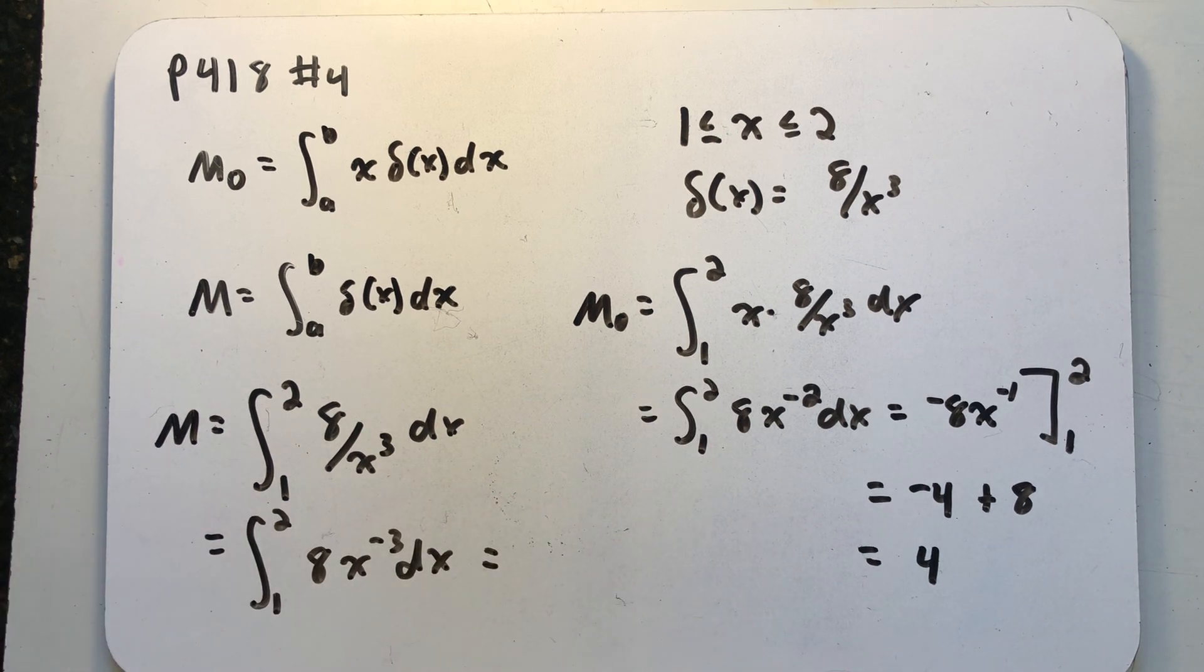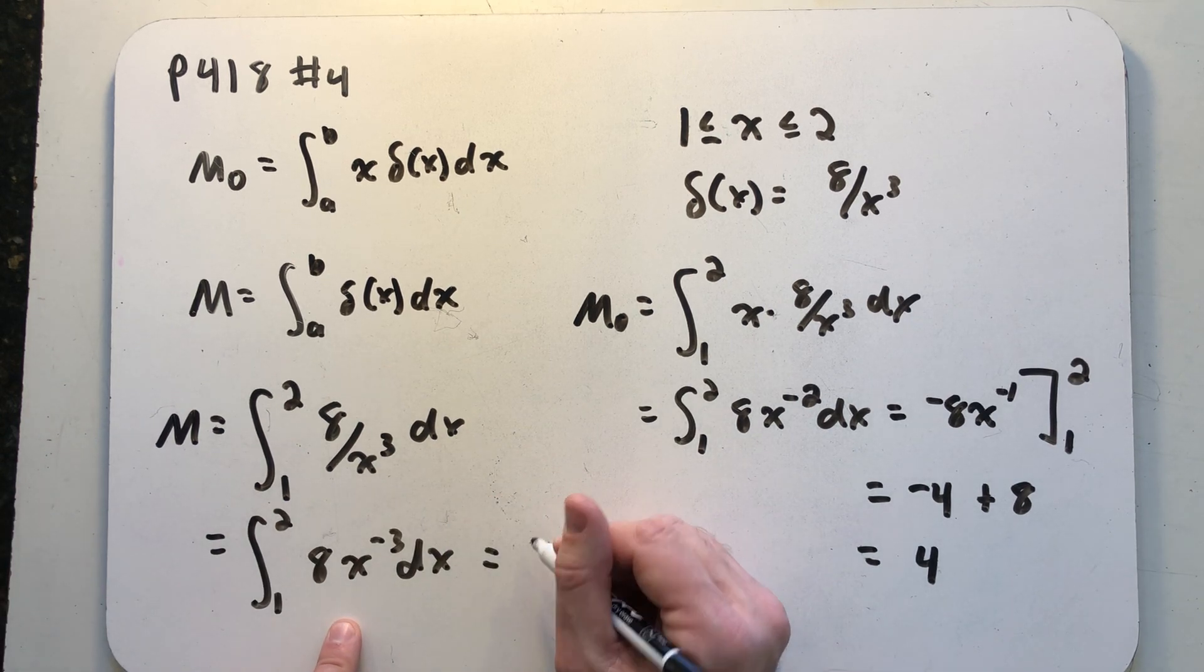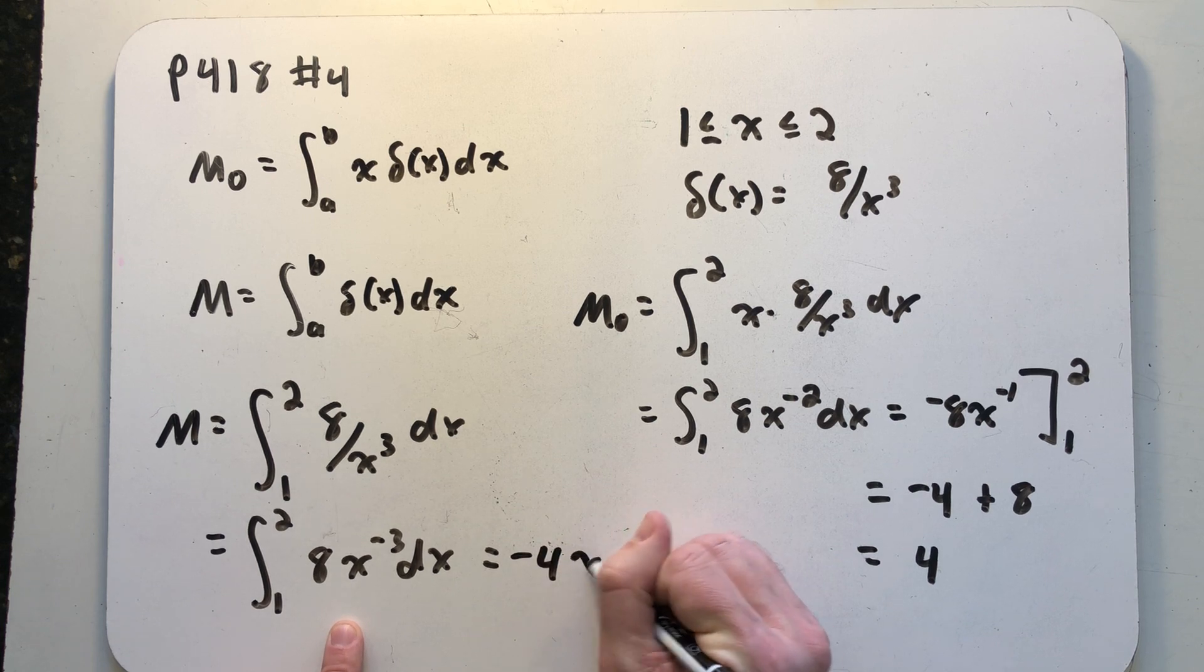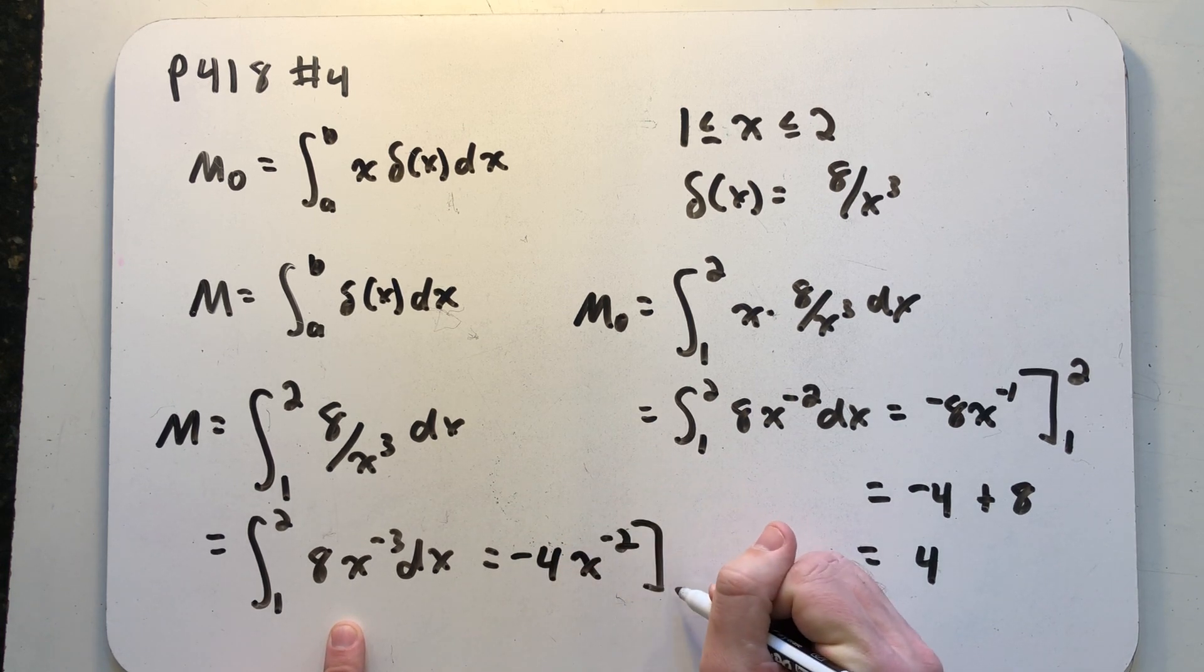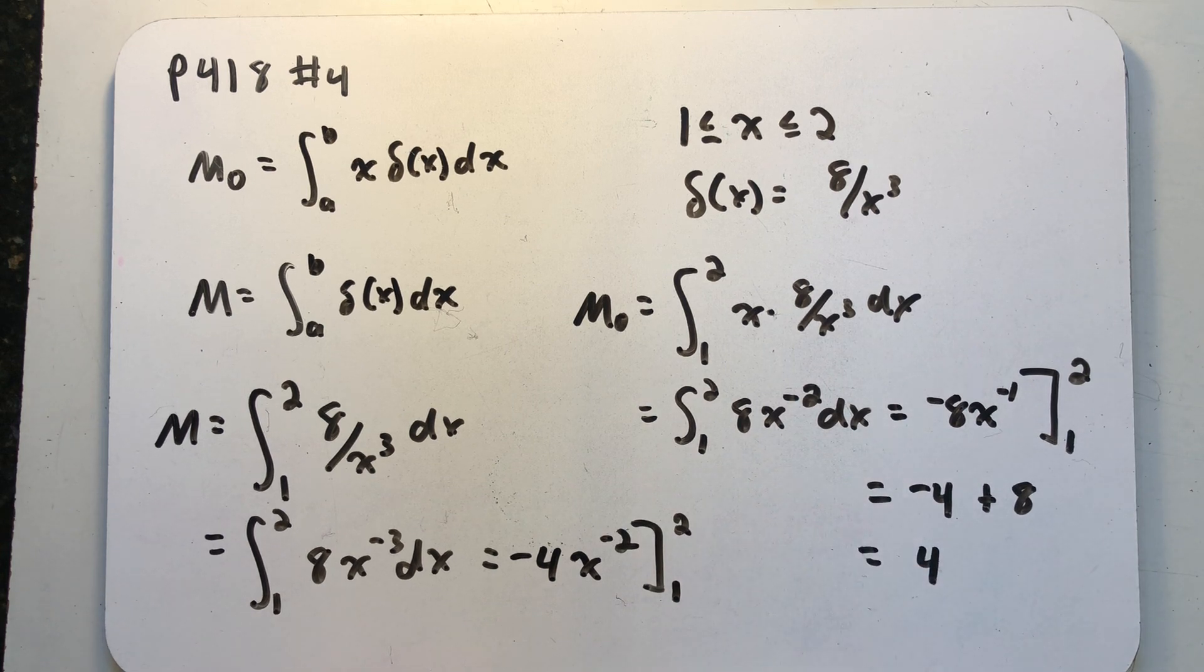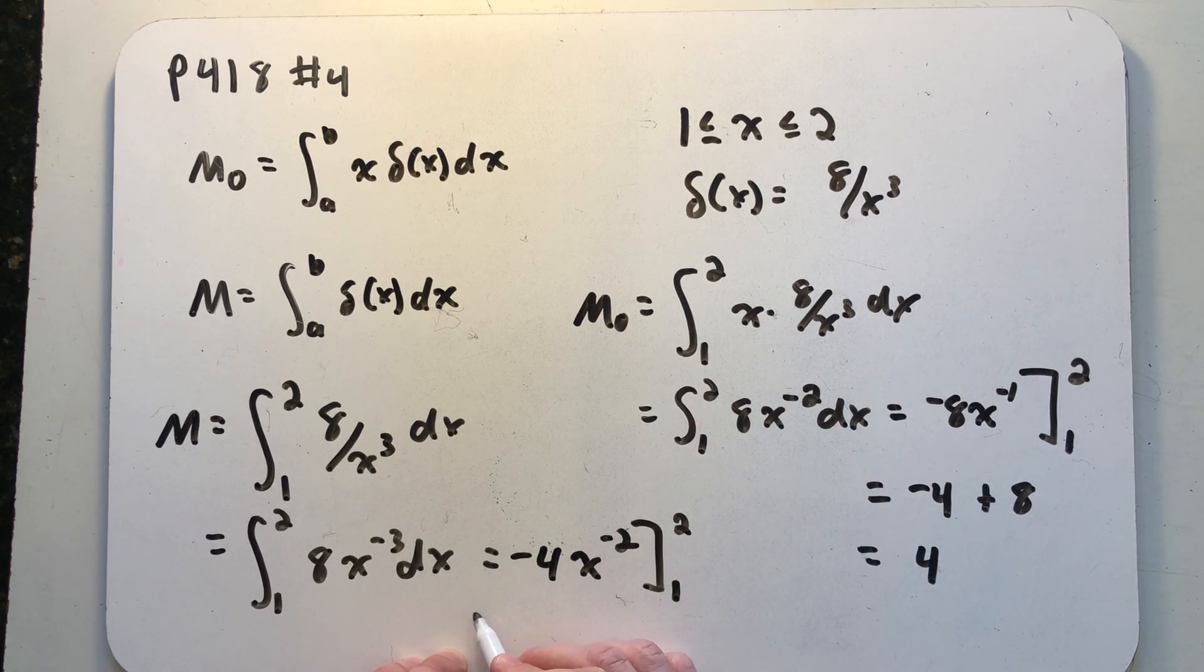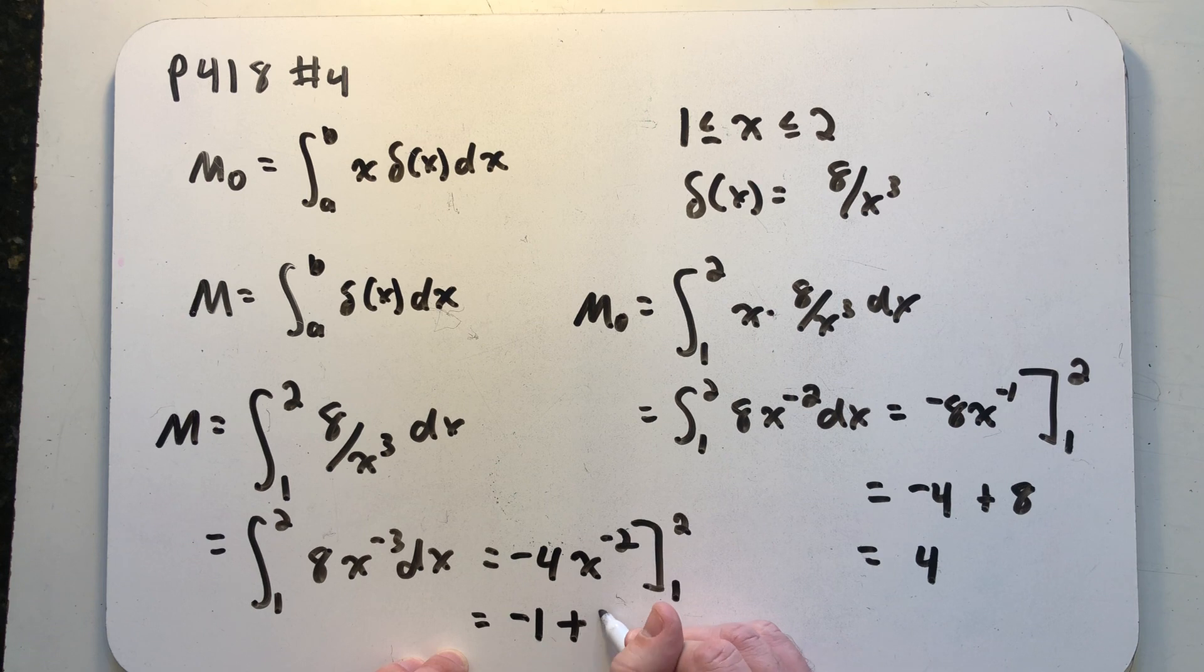All right, again we'll just find an anti-derivative here and we're evaluating from 1 to 2. Well let's see, that would be a minus 4 divided by 4 is minus 1, minus a minus 4. We get 3.